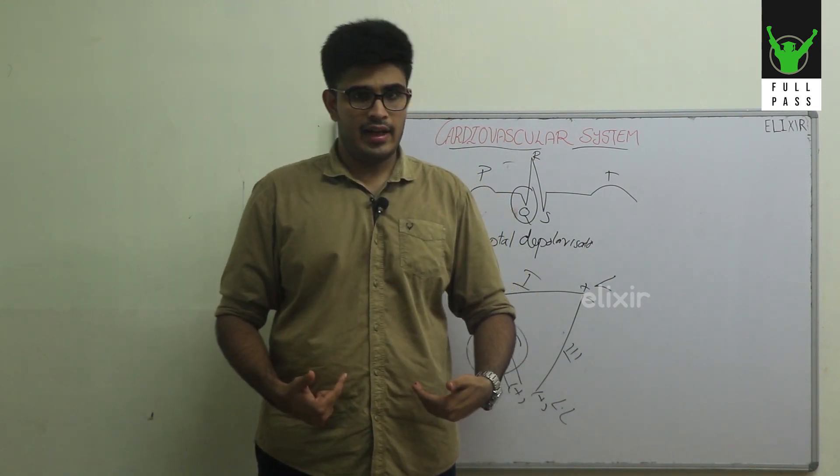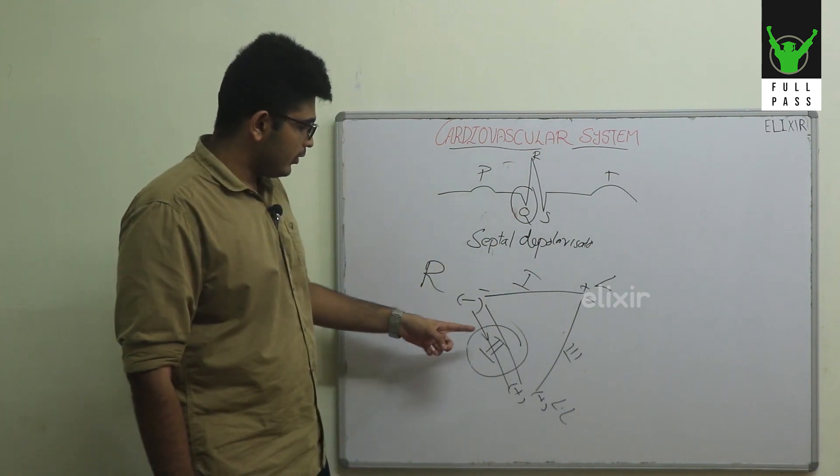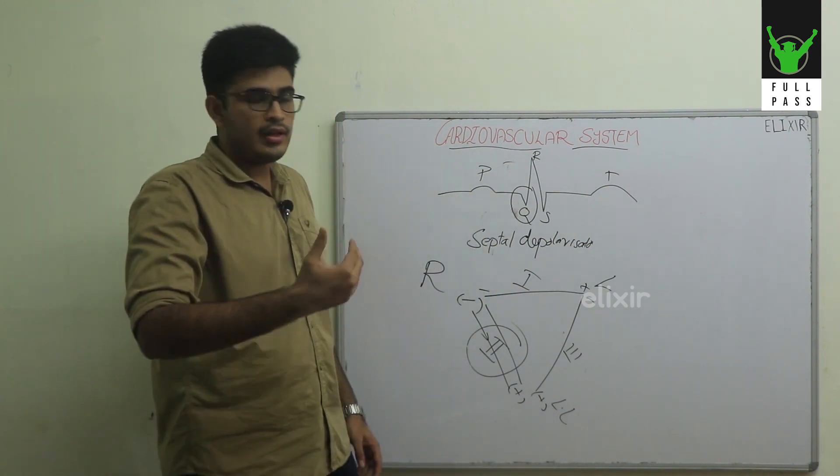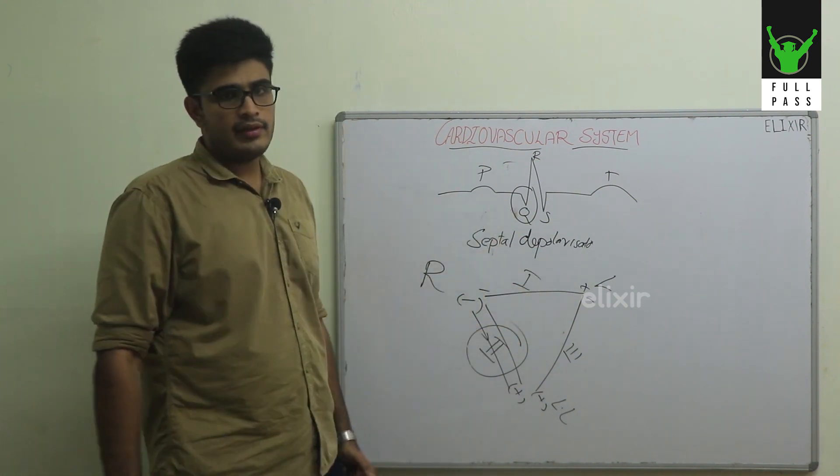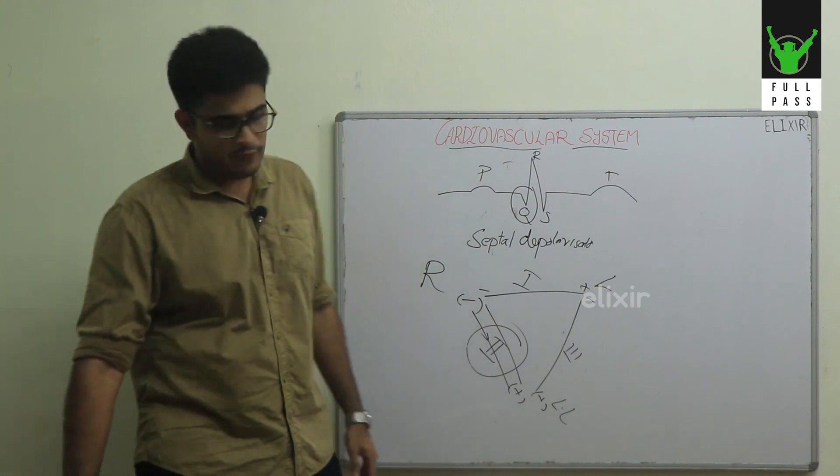According to the second lead, by convention, the Q wave depolarization or septal depolarization occurs in an opposite direction. Hence, the Q wave is negative. That's all you have to know about the Q wave.